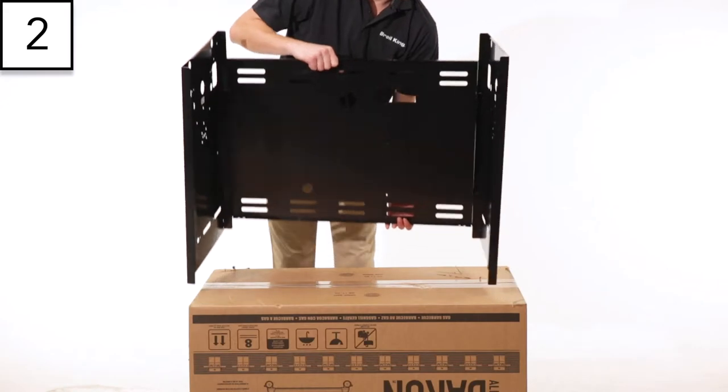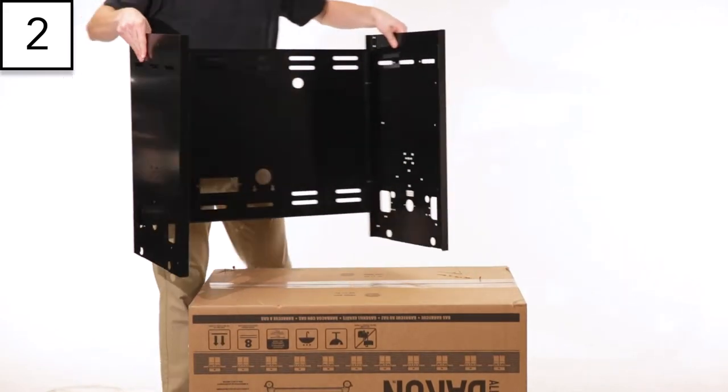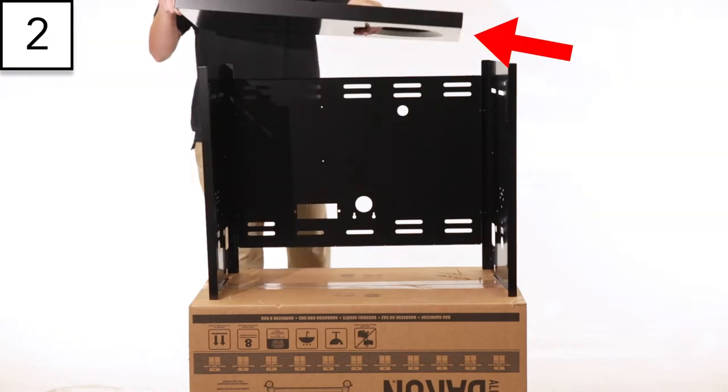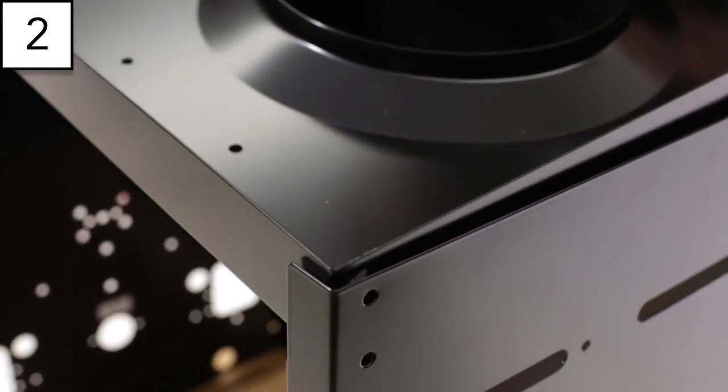Step 2. Turn the three-piece cabinet upside down and install the base. Note the position of the tank cutout to ensure the base is installed correctly.